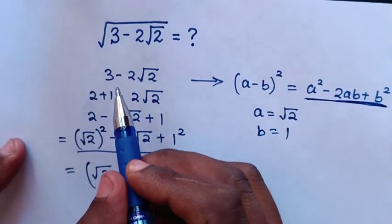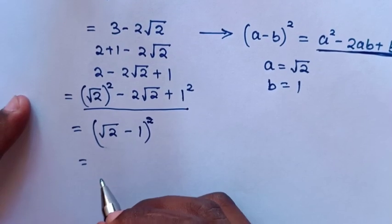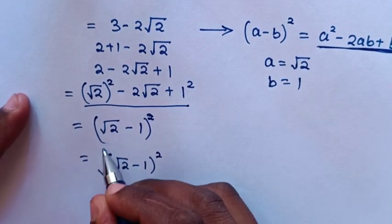Recall this expression was this one under square root, so we will apply square root in here. This is equal to square root of square root of 2 minus 1 bracket square.